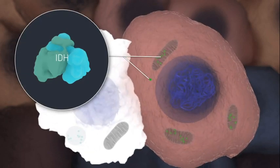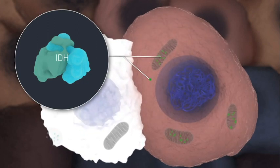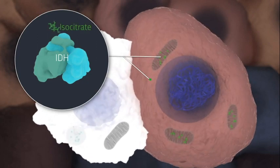IDH is a metabolic enzyme inside cancer cells that normally converts isocitrate into AKG.